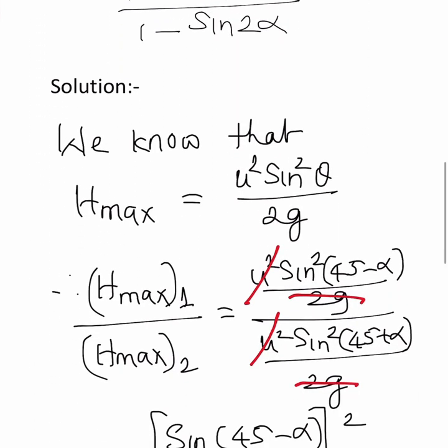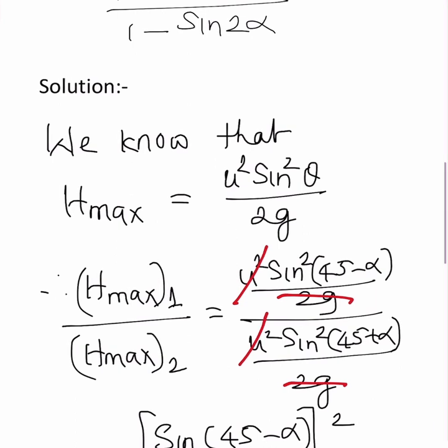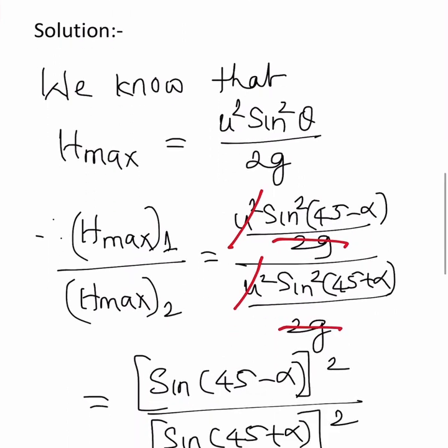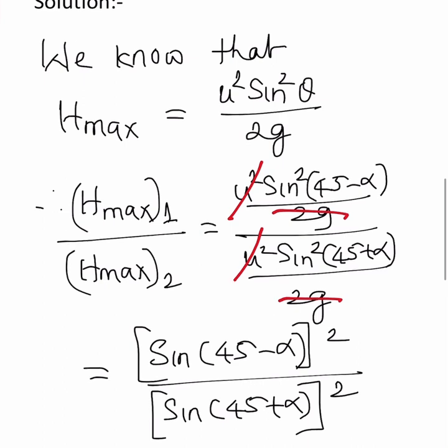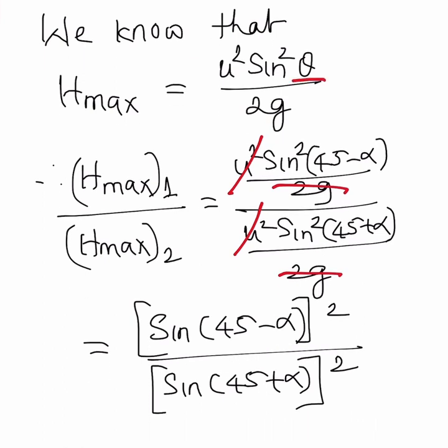Now here is the solution. We know that maximum height is equal to u square sine square theta by 2g. So for the first projectile, in place of theta we are substituting 45 minus alpha.